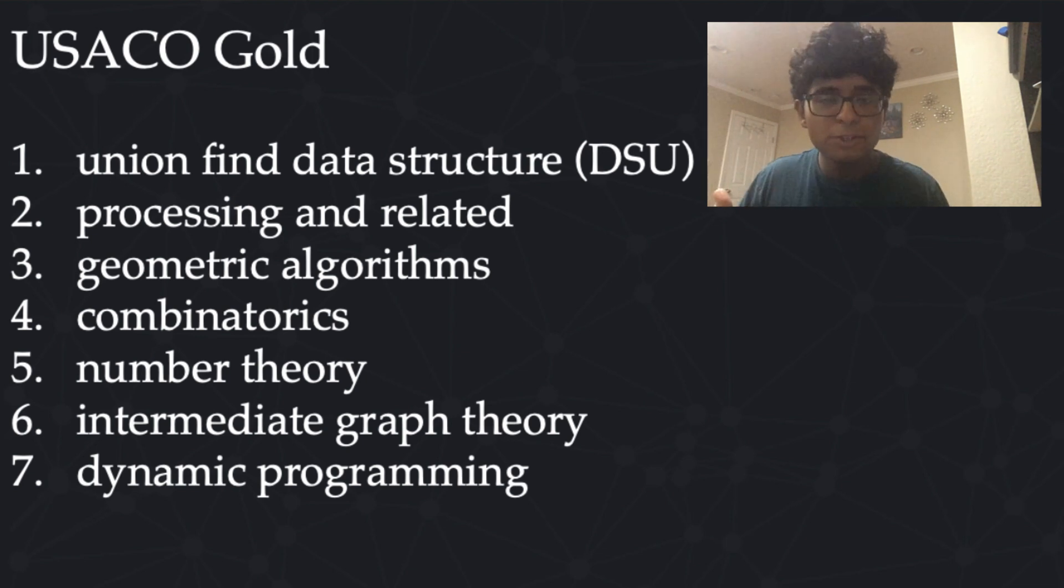And then we have intermediate graph theory. So for this, we have to know the shortest path algorithms, such as breadth-first search, Dijkstra, Floyd-Warshall, and Bellman-Ford. And we have to know how to use priority queues and sets for these, as well as how to produce the shortest path tree. And then we need to know how to find the minimum spanning tree, using algorithms such as Prim and Kruskal. And then we need to know general tree algorithms, such as the pre-order traversal flattening trick, lowest common ancestors, and optionally, heavy-light decomposition.